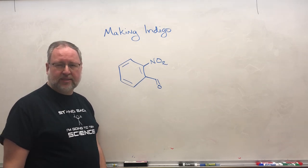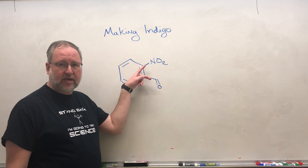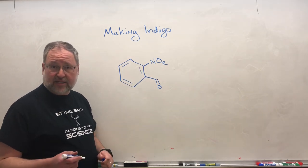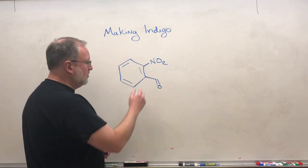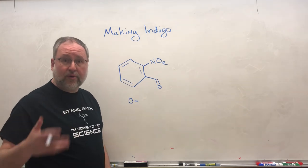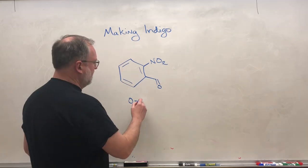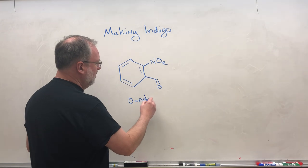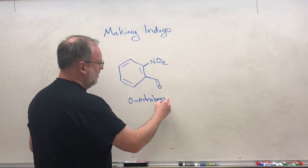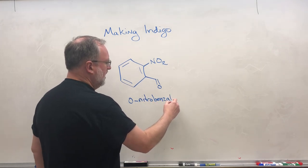and we just have to figure out which isomer we're talking about. It's the one where they're next to each other. So that's 2-nitrobenzaldehyde, or if you prefer, ortho-nitrobenzaldehyde, or just o-nitrobenzaldehyde.